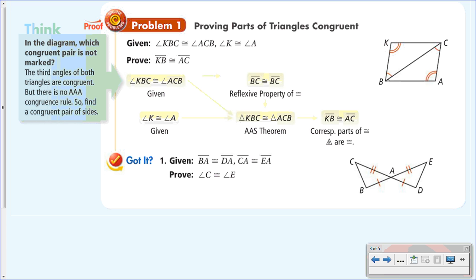We have two corresponding angles, so let's find a corresponding side. BC is in both triangles, so BC is congruent to BC by the reflexive property. These three statements together prove the two triangles congruent by angle-side-angle. Now that we know the triangles are congruent by ASA, we know all corresponding parts are congruent — so the last remaining angles are congruent, and since KC and BA are corresponding, we know they're congruent.